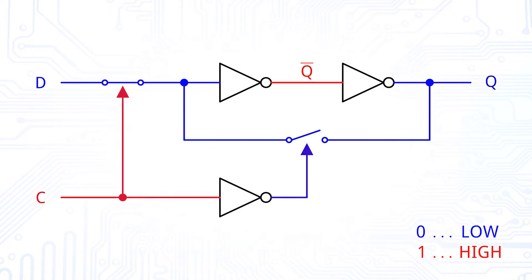If C is low, the switch at the input D is open and the inverters are in a loop, saving the old state.